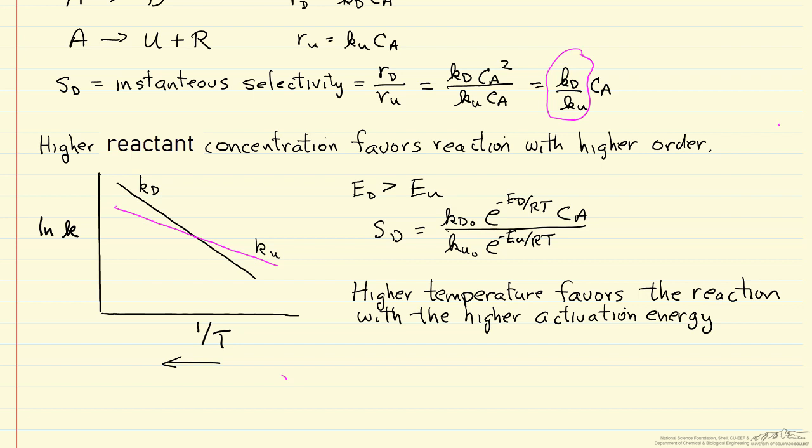For example, let's suppose that we have a catalyst that increased the rate constant for the first reaction, the desired reaction, without really significantly affecting the rate for the second reaction. Let's look at that on this log K versus one over T plot.